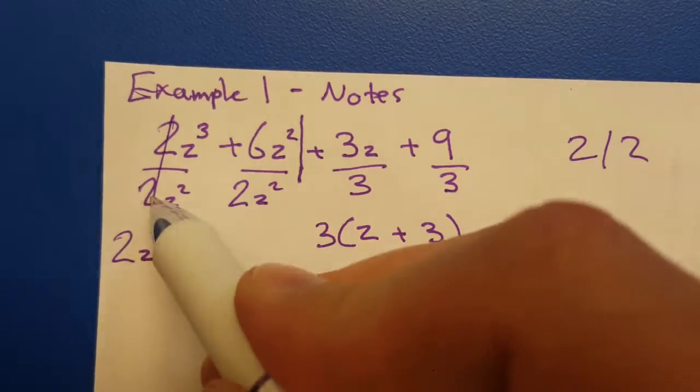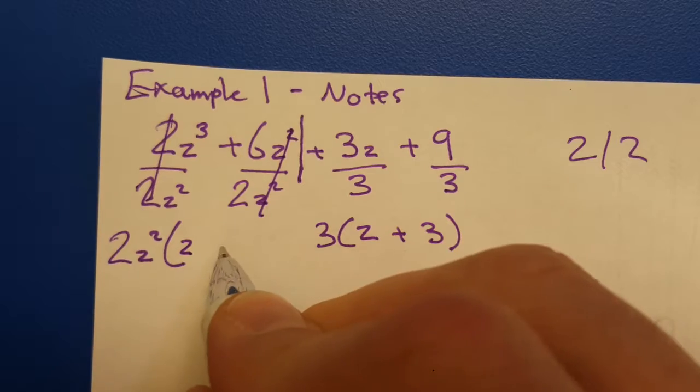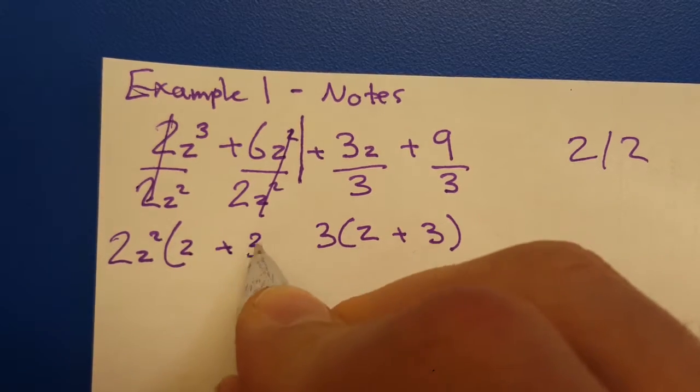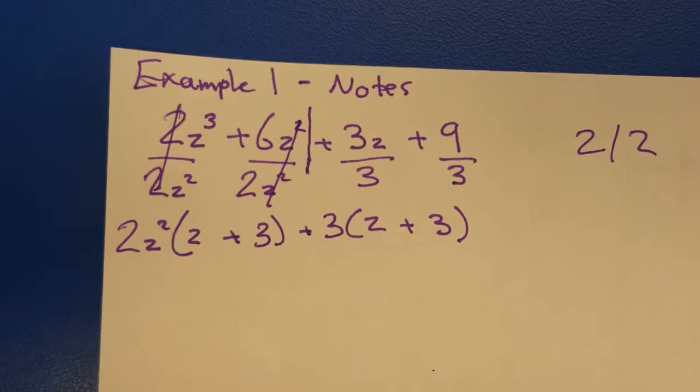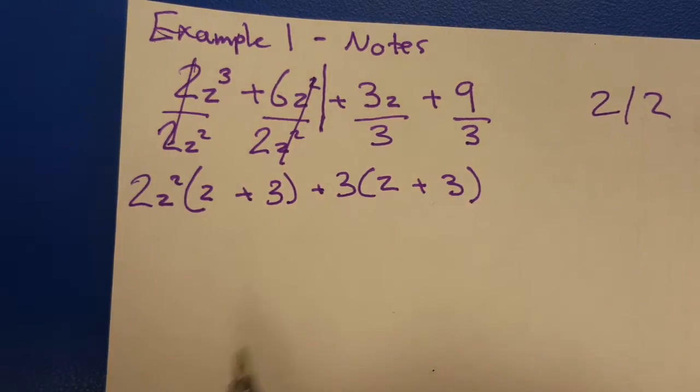This is just dividing. 2's cancel. Z squared's cancel. Z plus a 3. I guess that was a plus 3. Now, look at this. Remember the intro video.